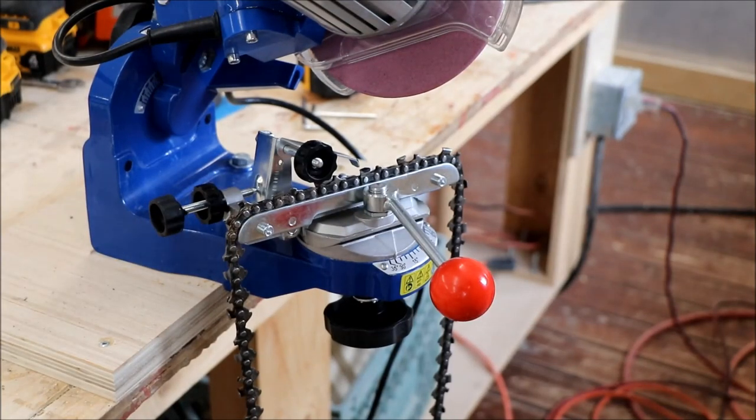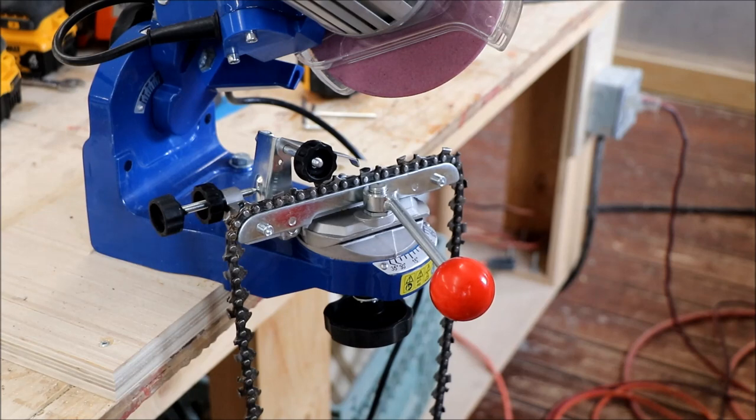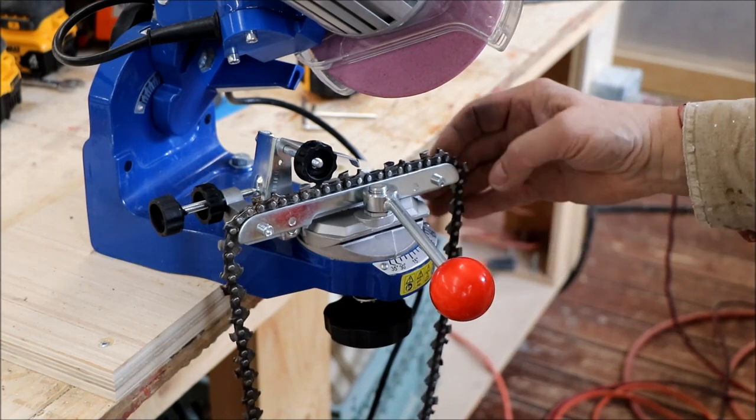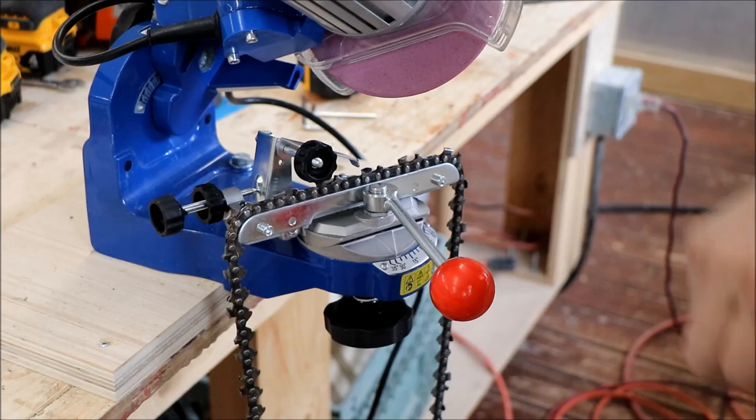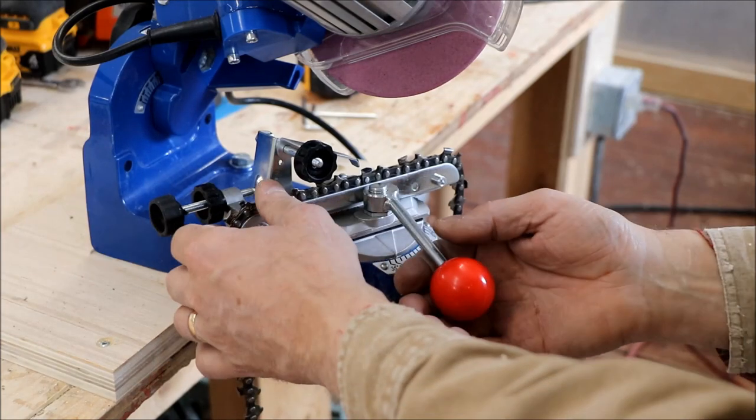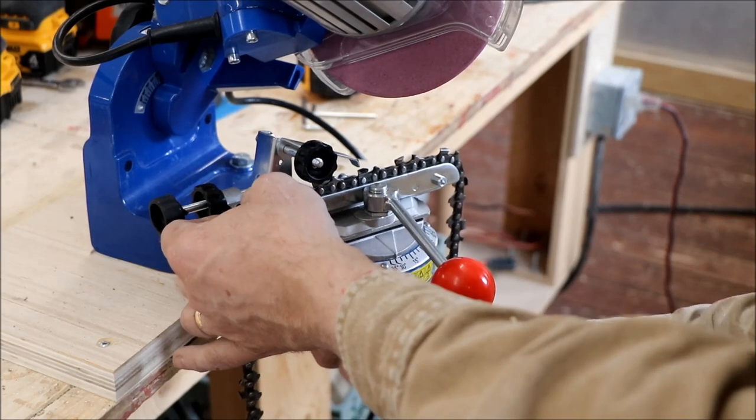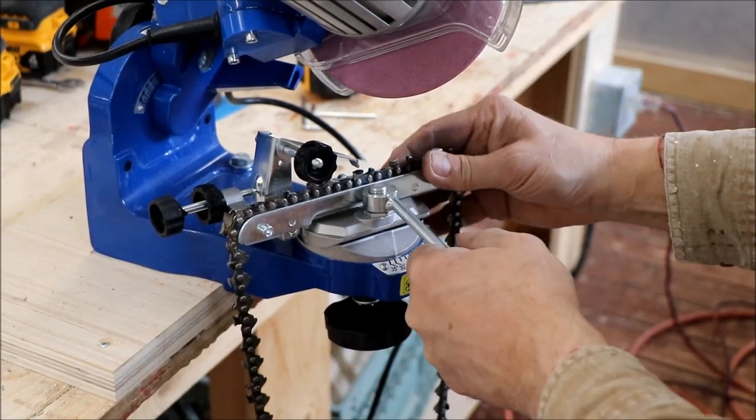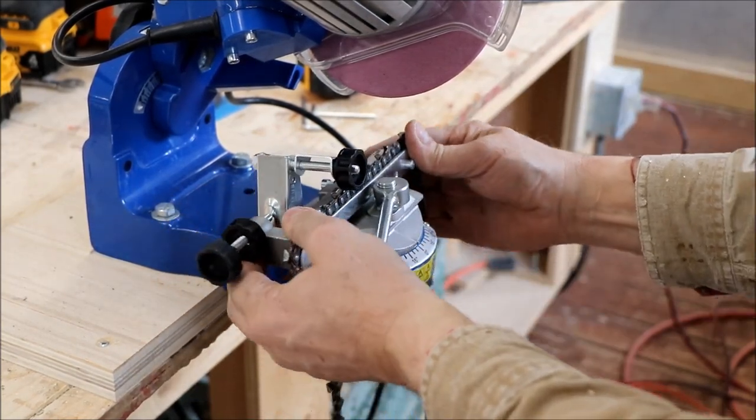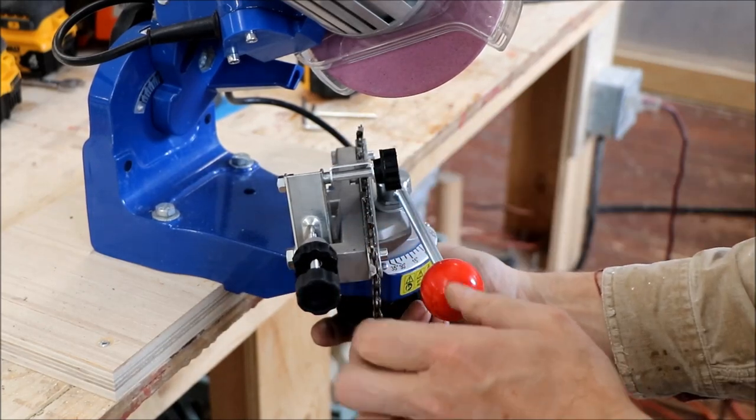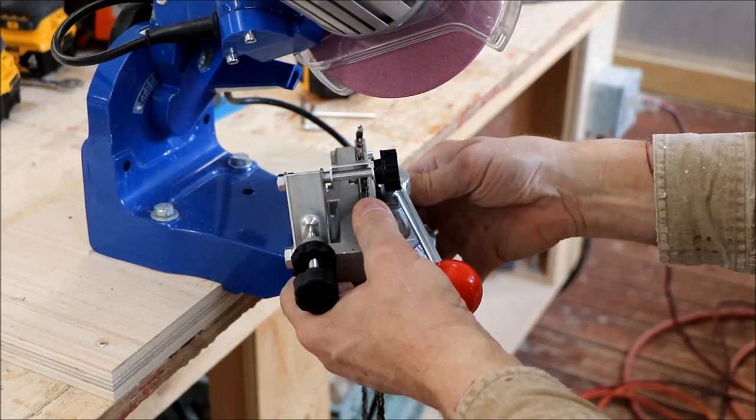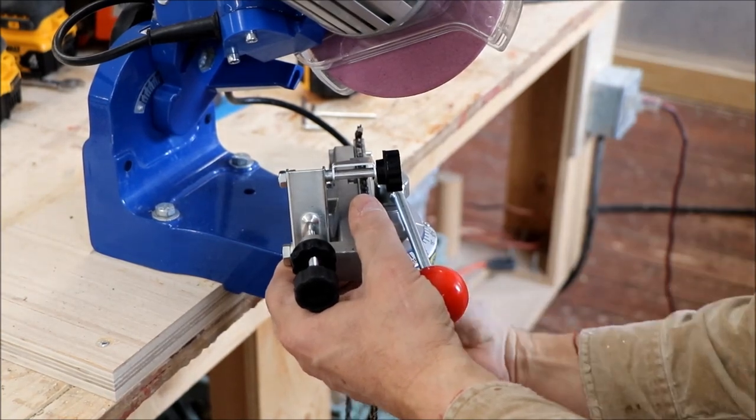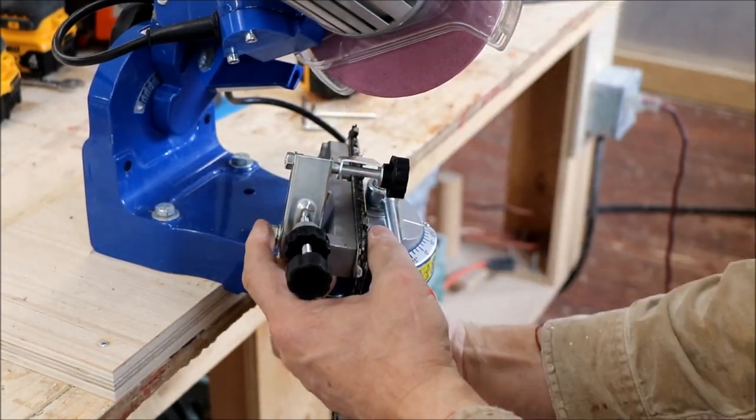All right, so that was pretty quick. So we have a 72 tooth, so that's 36 that I did there, and that goes pretty quick. And so now we have to change the angle to do the opposing grind. So we'll loosen this off, we'll switch this to 30 degrees the other way, and the 10 degrees the other way.